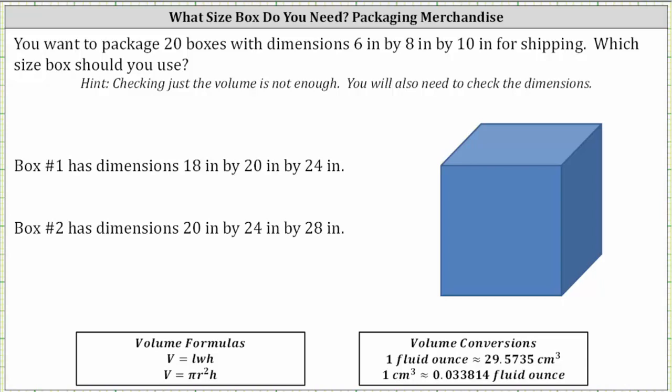You want to package 20 boxes with dimensions 6 inches by 8 inches by 10 inches for shipping. Which box size should you use? Box one has dimensions 18 by 20 by 24 inches. Box two has dimensions 20 by 24 by 28 inches.